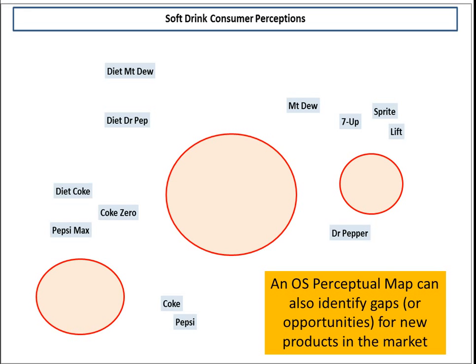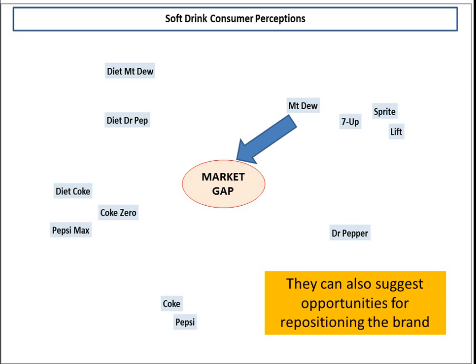Another use of the overall similarities perceptual map is in new product development, when we're looking for gaps or opportunities in the marketplace — areas where there is no distinct brand in consumers' minds. Likewise, we can use it not just for a new product but also to reposition our brand. Here I've used an example of Mountain Dew wishing to move away from the cluttered environment with a few competitors towards the gap, so we might plan an image change using this sort of map.